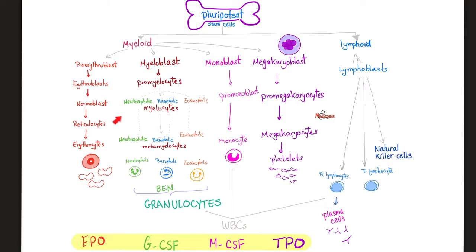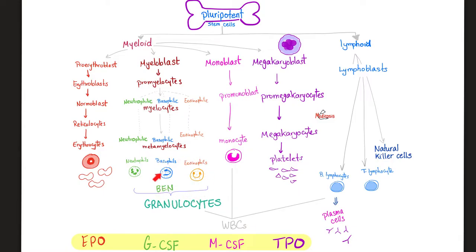Now let's talk about cancers. A cancer here is polycythemia vera. A cancer here is essential thrombocytosis. A cancer in the immature white blood cells is an acute leukemia — here is acute myeloid leukemia, here is acute lymphoid leukemia. A cancer of the mature white blood cells is a chronic leukemia: chronic myeloid leukemia, chronic neutrophilic leukemia, chronic eosinophilic leukemia, and chronic lymphocytic leukemia. You can also have more than one, such as chronic myelomonocytic leukemia. We talked about all of these topics in my hematology playlist.